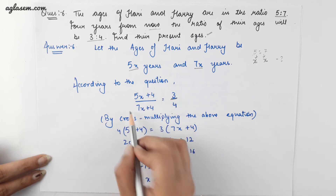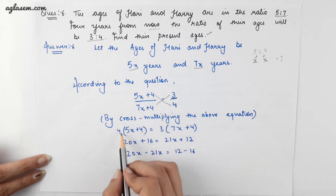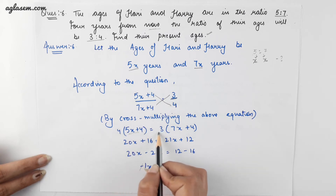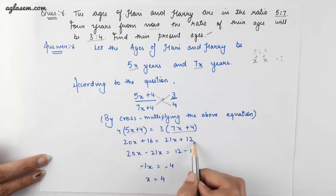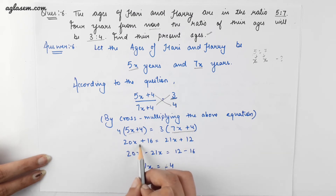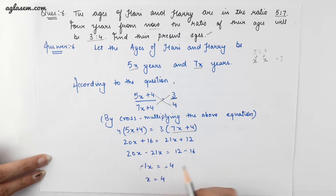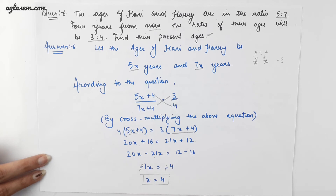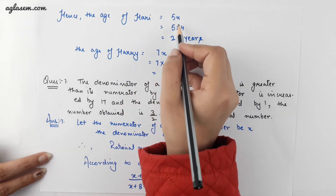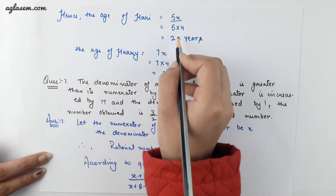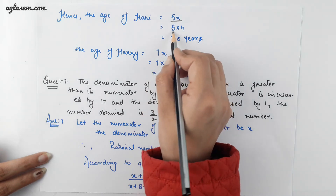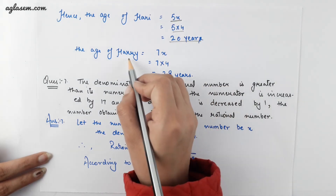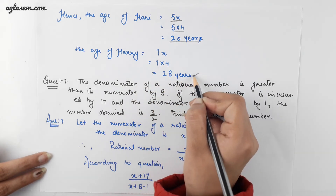This gives us a simple equation. Applying the cross multiplication method: 4 into (5x plus 4) is equal to 3 into (7x plus 4). Solving the equation and moving variable terms to one side and constant terms to the other, we get 20x minus 21x is equal to 12 minus 16. We get minus x is equal to minus 4, so x is equal to 4. Therefore the present age of the first person is 5 into 4 equals 20 years, and the present age of the second is 7 into 4 equals 28 years.